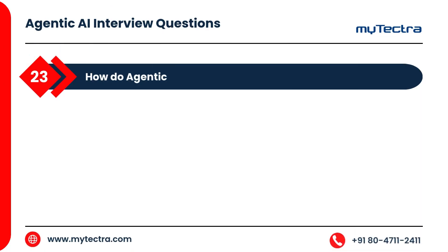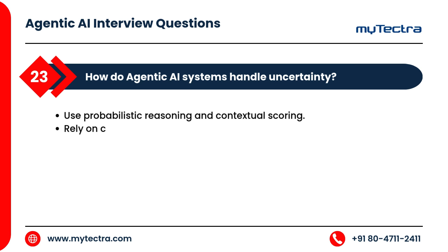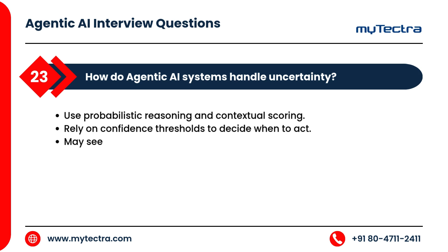How do agentic AI systems handle uncertainty? They rely on probabilistic reasoning and contextual scoring, and use confidence thresholds to decide when to act. They may seek clarification or defer to human input if confidence is low.